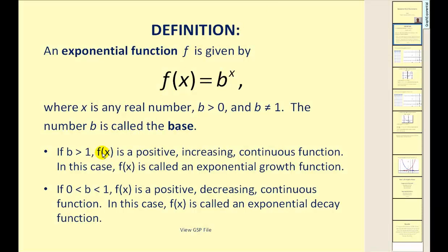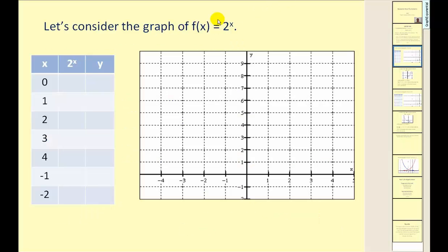So again, when b is greater than one, it's exponential growth, and if b is between zero and one, we have exponential decay. Let's consider the graph of f of x equals two to the power of x. Just like any other function, if we want to graph it and we're not sure what it looks like, we make a t-table. I've already picked values of x — let's substitute them in and find the corresponding y values.